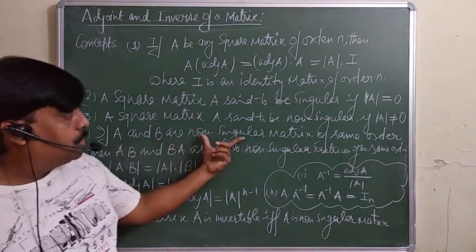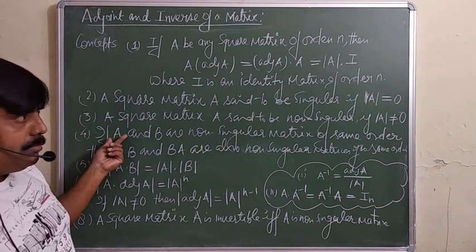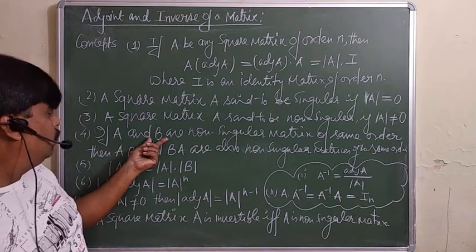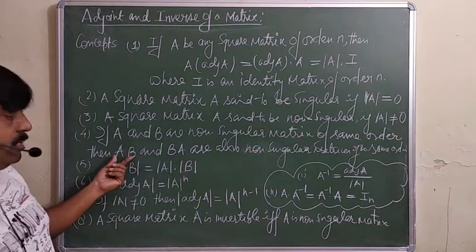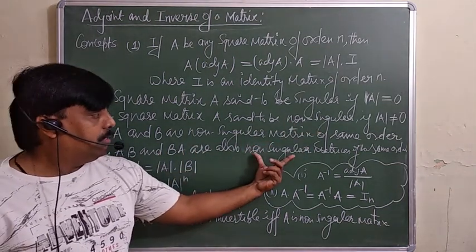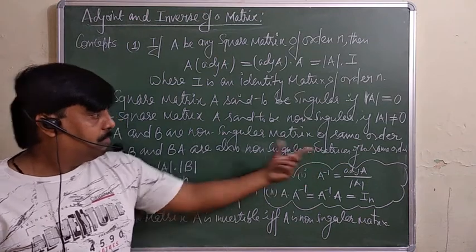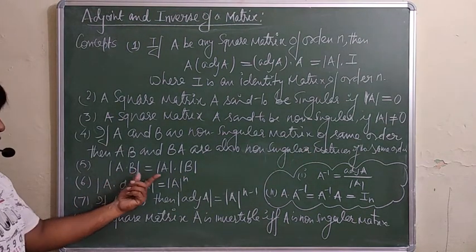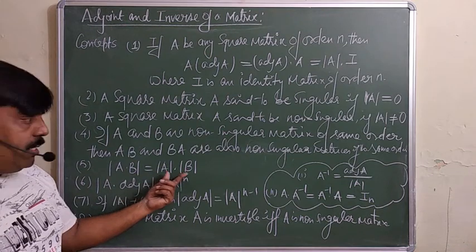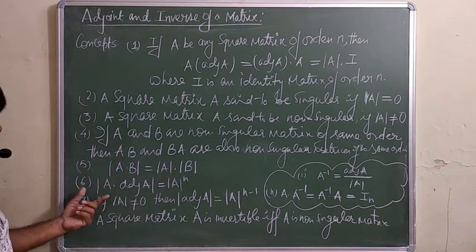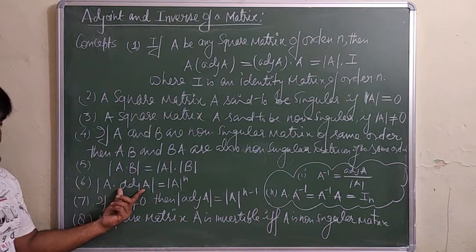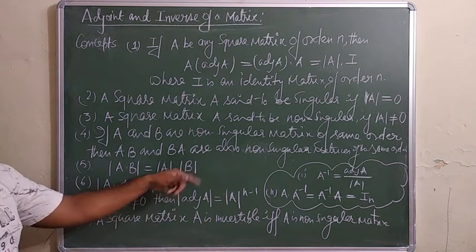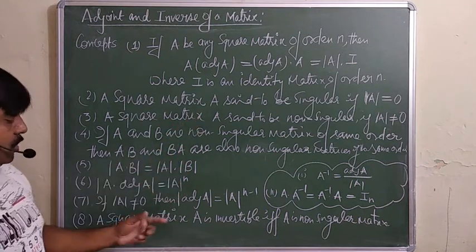If A and B are non-singular matrices of the same order (meaning det(A) ≠ 0 and det(B) ≠ 0), then A·B will also be a non-singular matrix of the same order. Also, det(A·B) = det(A)·det(B). Furthermore, |adj(A)| = |A|^(n−1), where n is the order of the matrix.